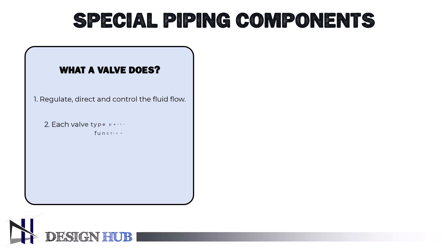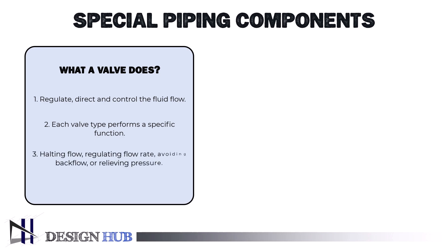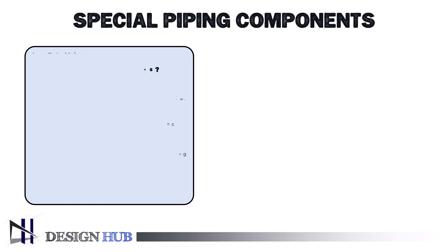Each valve type performs a specific function, such as beginning or halting flow, regulating flow rate, avoiding backflow, or relieving pressure. Here's an overview of the most typical valves in process plants.